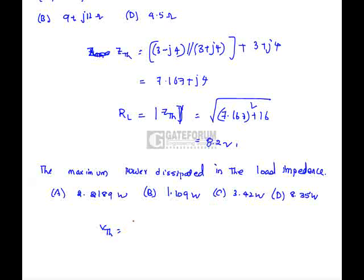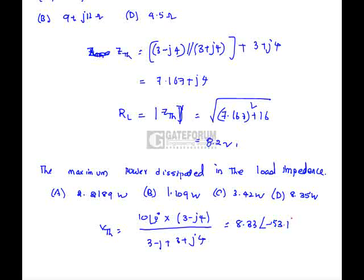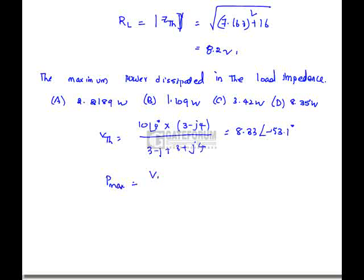The maximum power is |V_Th|² / (4RL) = 2.218 watts. Hence, option A is correct for part A, and option C is correct.